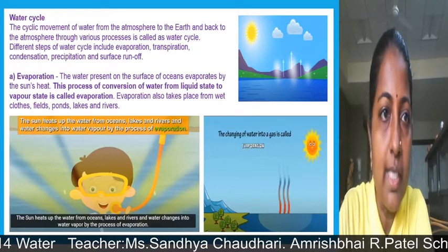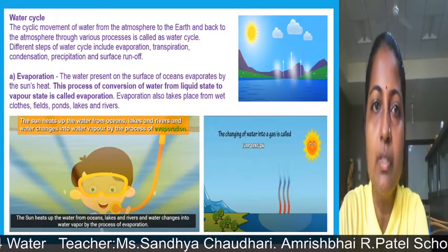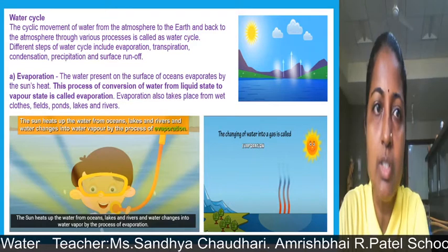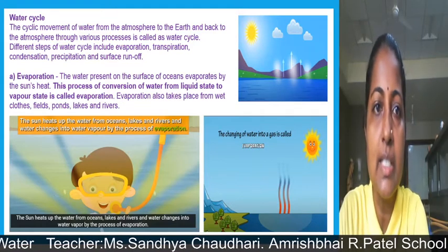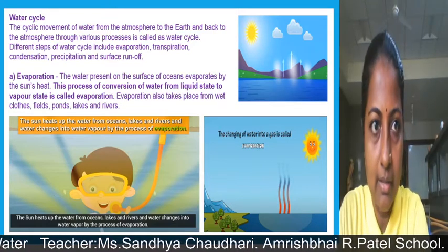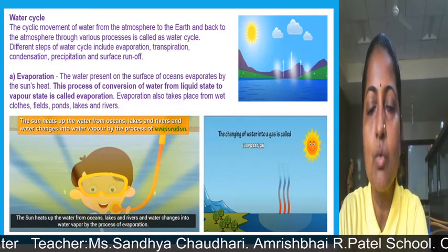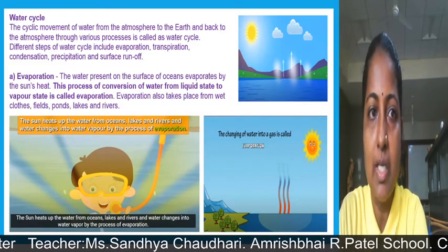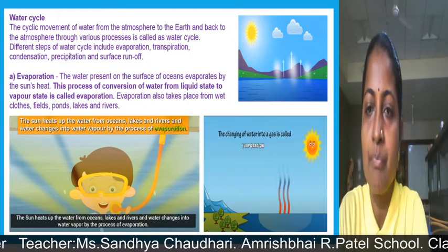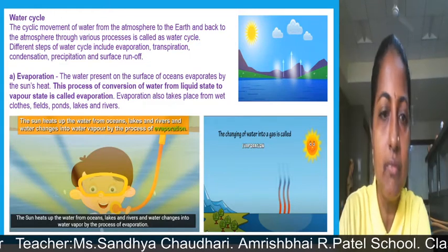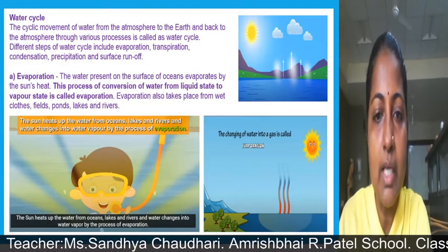The cyclic movement of water from the atmosphere to the earth and back to the atmosphere through various processes is called the water cycle. The steps of the water cycle include evaporation, transpiration, condensation, precipitation, and surface runoff. Now we will see evaporation — as you can see in the figure, water bodies are heated up by the sun.